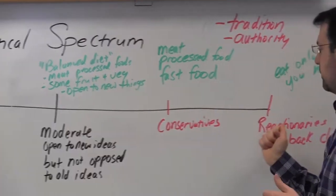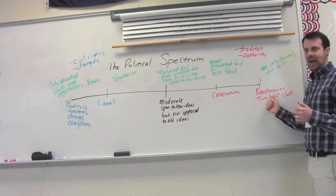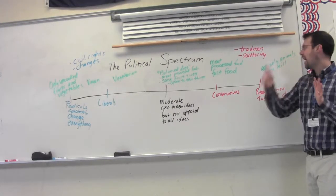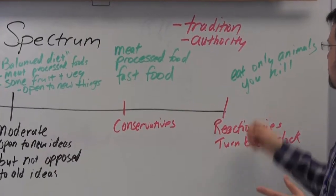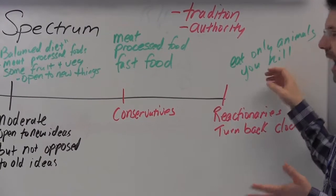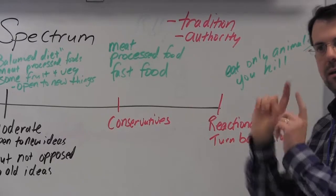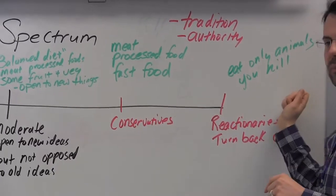If you're a little bit more extreme on the conservative side, you're what's called a reactionary. You want to turn the clock back in time. I would say that if you're a reactionary as far as your diet, you're talking about eating only animals that you kill. That's something that was done back in the day. You're turning back the clock.